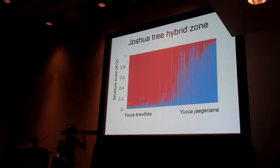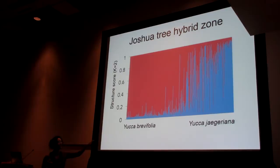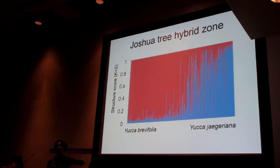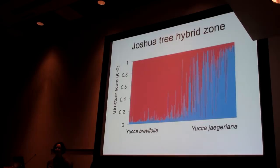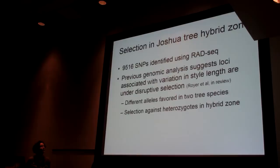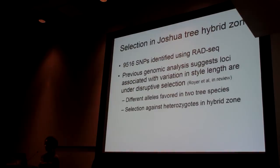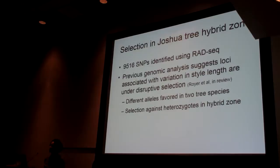Each vertical line here represents STRUCTURE scores for a single tree in the hybrid zone, and the trees are organized left to right in a transect perpendicular to the hybrid zone. On the left you have populations dominated by pure brevifolia trees, and on the right jaegeriana trees, but in the middle you find both pure individuals of both species intermixed with hybrid individuals. We used this population to take a population genomics approach to understanding whether there's selection on the key style length trait. We developed SNPs using a RADseq approach — about 10,000 informative SNPs — and performed a GWAS to identify loci significantly associated with variation in style length.